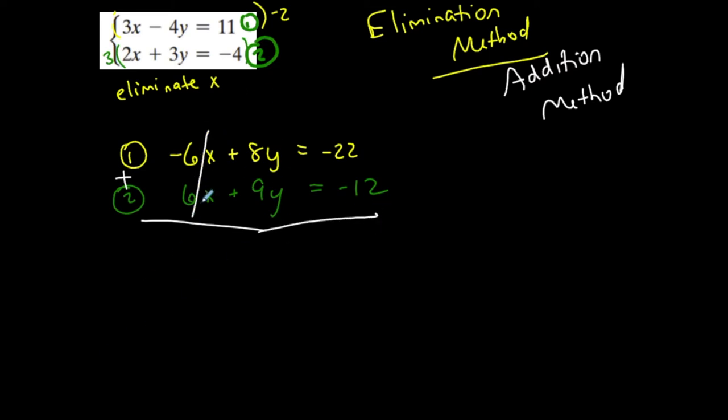Add the two equations together. Negative 6x plus 6x is 0. I eliminate x. Add up my y. 17y is equal to negative 22 minus 12 is negative 34. And now this is an easy equation of one variable. Y is equal to negative 34 divided by 17, negative 2. I'm able to solve for y.